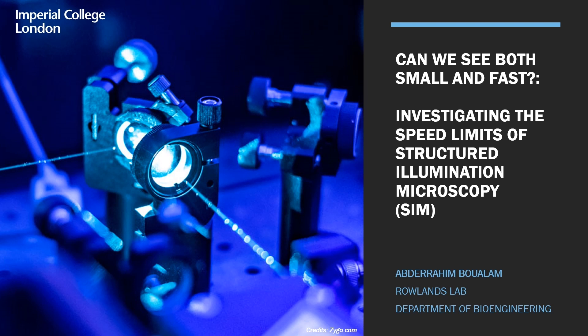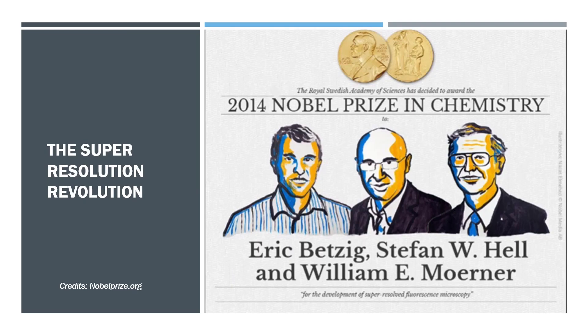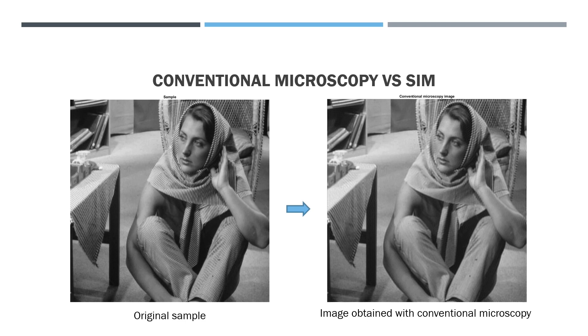Hi everyone, my name is Abdi Rahim and I'm a final year PhD student in the Rawlins lab. In our lab we work on several exciting biophotonics projects ranging from microscopy, holography, all the way to microfluidics and optical ultrasound imaging. But today we're going to talk about structured illumination microscopy, or SIM. We're going to explore the speed limits of this technique and see whether we can see both small and fast.